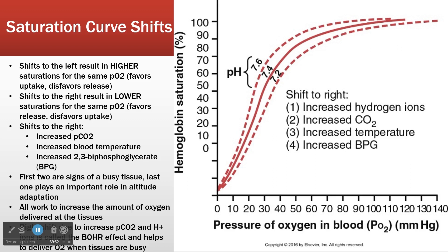So what does that mean? A shift to the left means higher saturations for the same PO2. So a shift to the left in my example here is going to be our elevated pH. In the normal case, at a PO2 of 40, our saturation is 60%. Well, if our pH is 7.6, at PO2 of 40, we are almost 80%. So we have a higher saturation for the same PO2. This favors uptake — the hemoglobin is more vigorous at grabbing oxygen than it is at releasing it.